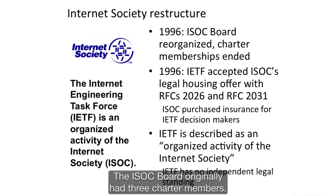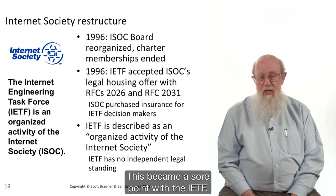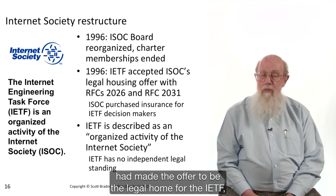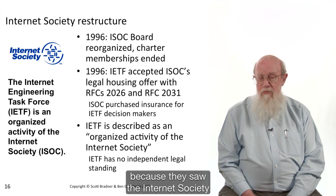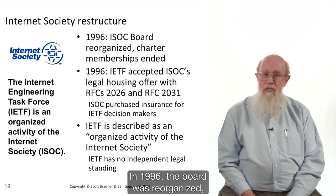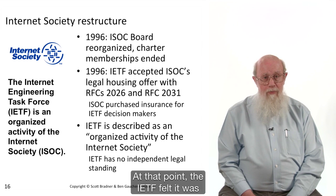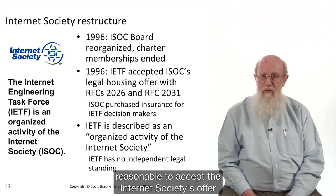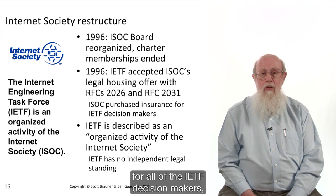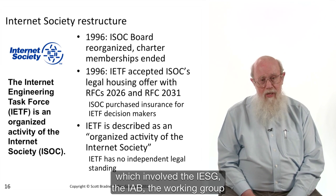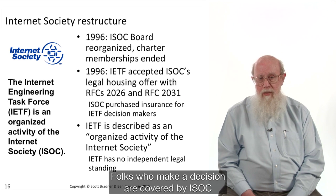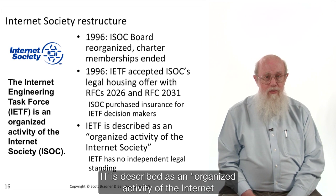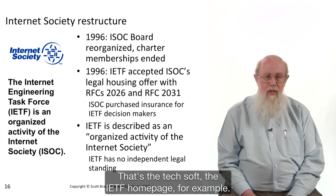The ISOC board originally had three charter members with permanent memberships who could veto any change in the bylaws. This became a sore point with the IETF, which declined to accept the Internet Society's offer to be its legal home because the board appeared to be controlled by those three charter members. In 1996, the board was reorganized and the charter memberships ended. At that point, the IETF felt it was reasonable to accept the offer. The ISOC purchased insurance covering all IETF decision makers — the IESG, the IAB, working group chairs, NOMCOM members, and others. The IETF doesn't legally exist independently; it is described as an organized activity of the Internet Society, with no independent legal standing.